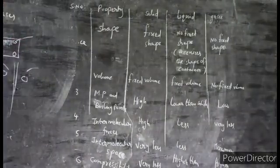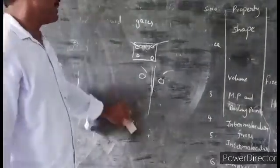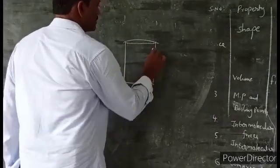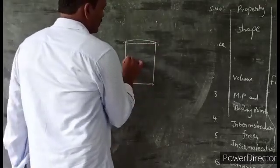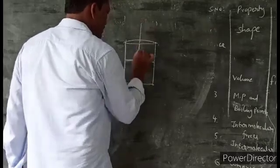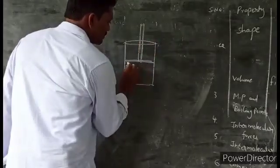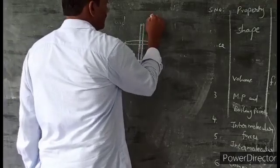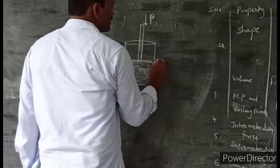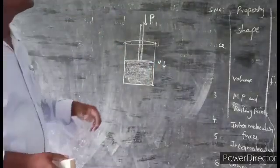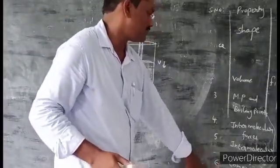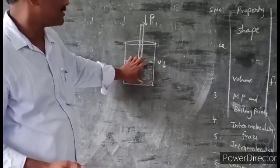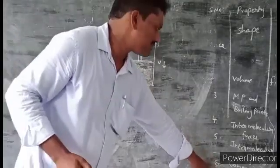The next property is compressibility. What is meant by compressibility? Take a beaker with a small piston and put some quantity of sand in it. When you apply pressure, the volume decreases. That property of a substance is known as compressibility. When pressure is applied, the volume of the substance gradually decreases — that property is known as compressibility.